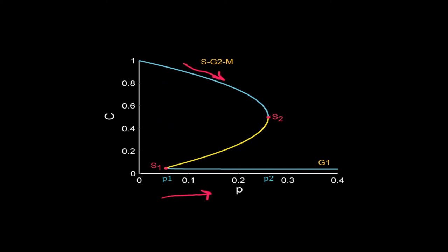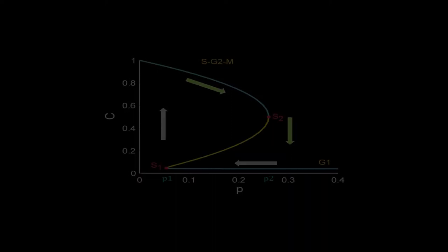As the cell moves through S-G2-M phase, P starts increasing. However, even in the bistable zone, C remains on the higher stable steady state. Once P is bigger than P2, the cell is again in a monostable zone and jumps to the steady state with low C. This leads the cell to the G1 phase. One cell cycle is now complete.